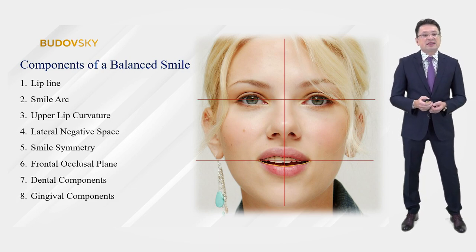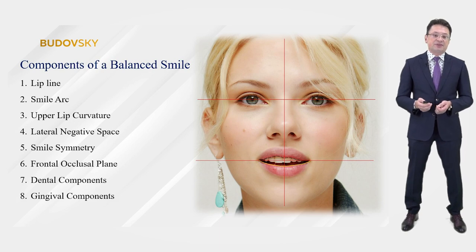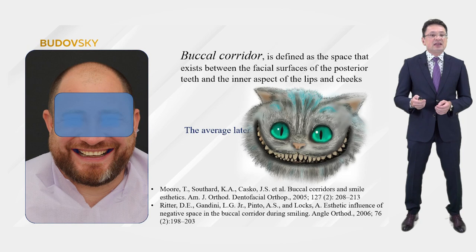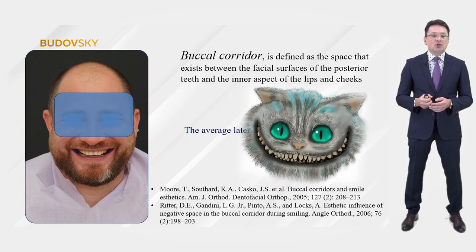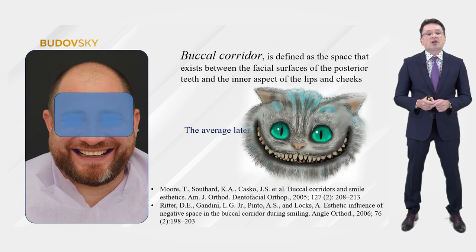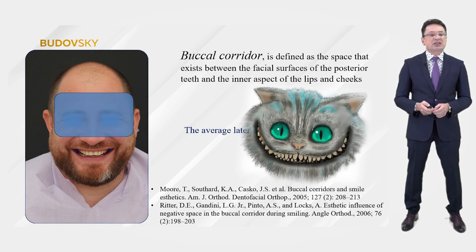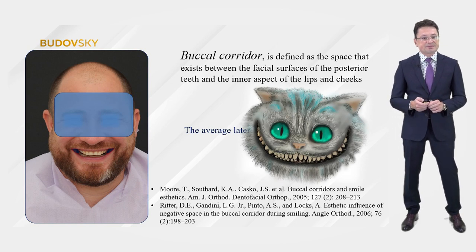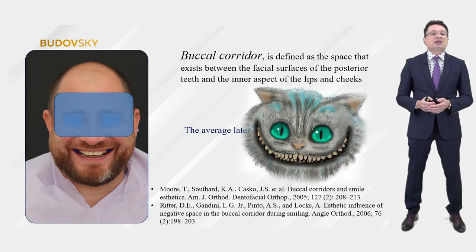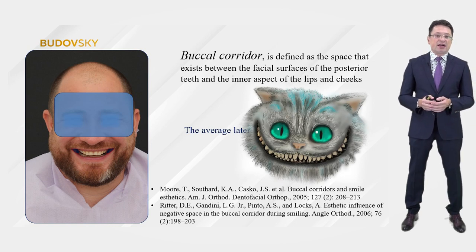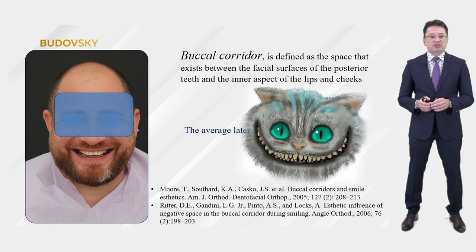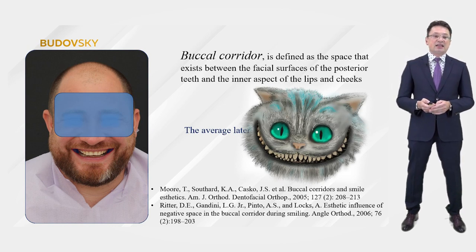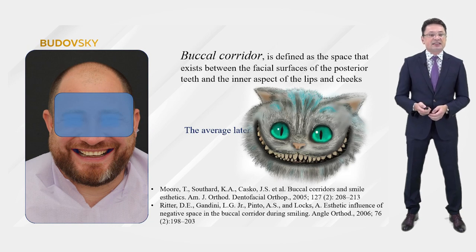Next, we will analyze their clinical and practical significance. Buccal corridors: if they are large, the upper jaw seems narrow — look at how it catches the eye in the second patient against the background of a large and wide head. If the corridors are heavily closed, it seems that there are too many teeth in the mouth — a Cheshire cat effect.